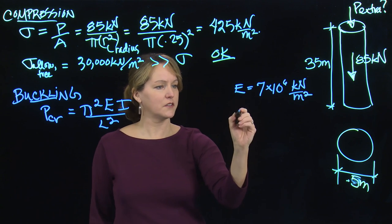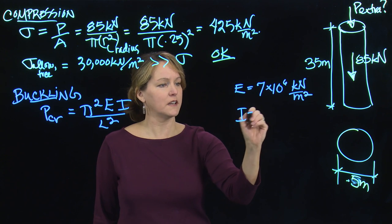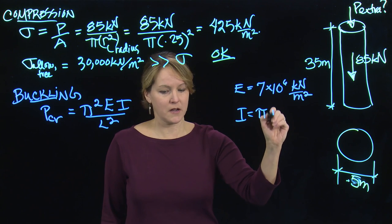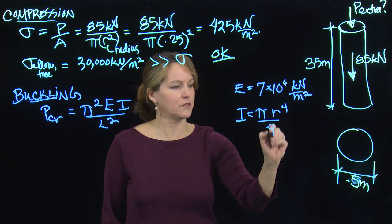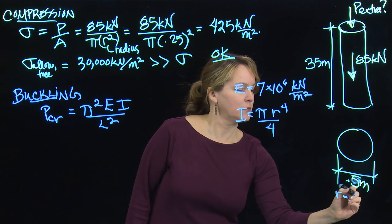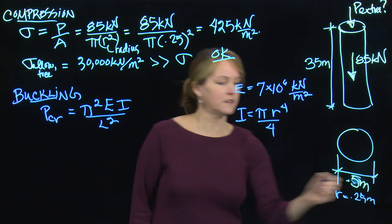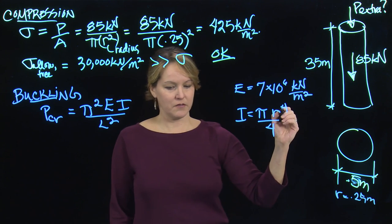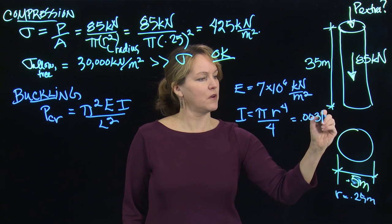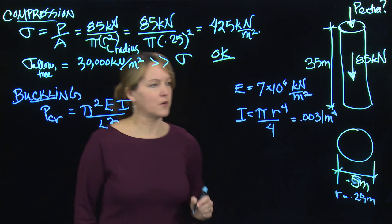For moment of inertia, I have a circular cross section. I can calculate moment of inertia for this cross section. That is pi r to the 4th over 4. r is 0.25 meters. This is the diameter. That value ends up being 0.0031 meters to the 4th.